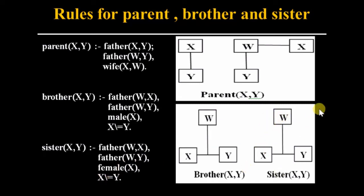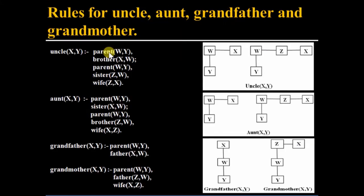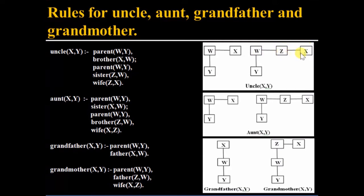This is the diagram to explain the sister relation. We have defined parent, brother, and sister. Now we will use these rules to define the uncle relation. Uncle(X,Y): X is the uncle of Y if W is the parent of Y and X is the brother of W, then X will be the uncle of Y. So: uncle(X,Y) :- parent(W,Y), brother(X,W).